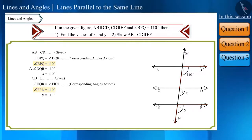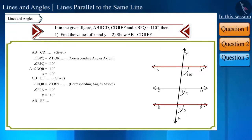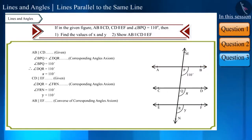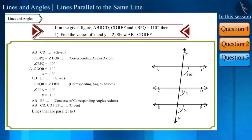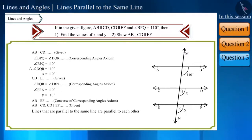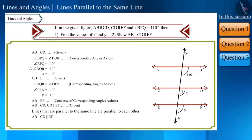Note that angle BPQ is equal to angle FRN, and these are corresponding angles. Therefore, keeping in mind the converse of the corresponding angles axiom, we can say that line AB and line EF are also parallel to each other. We are given that line AB is parallel to line CD and line CD is parallel to line EF. Lines that are parallel to the same line are parallel to each other, so we can use this theorem to confirm that these lines are all parallel.